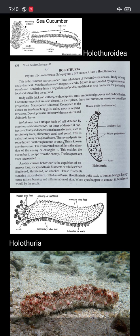The madreporite is internal, connected to the coelom via tube-branching canals called local respiratory trees. Development is indirect with auricularia and doliolaria larvae. Holothuria has a unique habit of self-defense by autotomy and evisceration. At times of danger, it contracts violently and severs some internal organs such as respiratory trees, alimentary canal, and gonads.